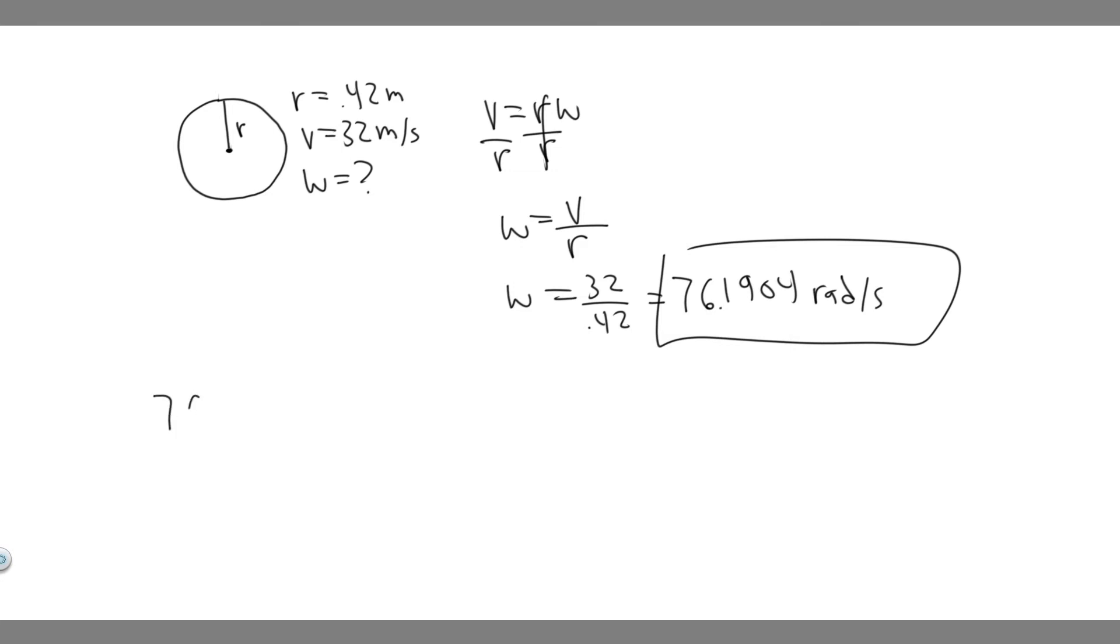So to convert it, 76.1904 radians per second. What we want to do is convert radians to revolutions and then seconds to minutes. So let's start with seconds.